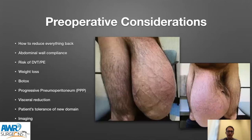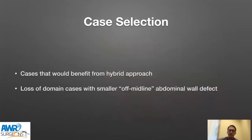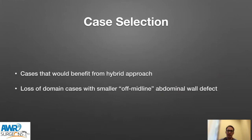Case selection is important here — this is not for all loss of domain cases. I'm specifically talking about cases that benefit from what's called the hybrid approach, where I do part or all of the work through a minimally invasive approach, while some portions still need to be performed through an open access — such as excision of excess skin and reduction of contents. The patients I select for this approach, while they do have loss of domain, have defects that are not large, and many times the defects are not directly through the midline.